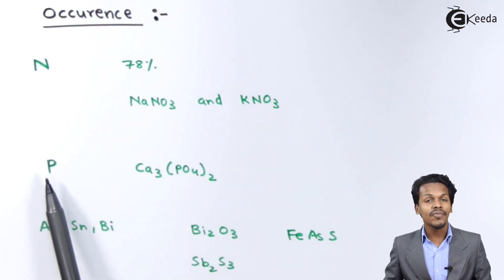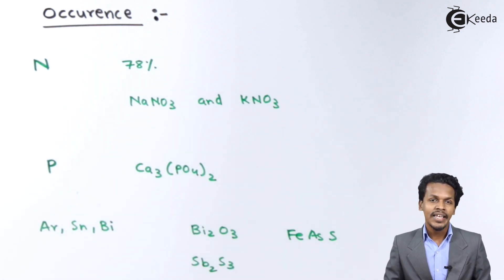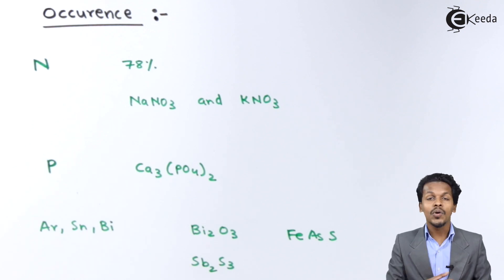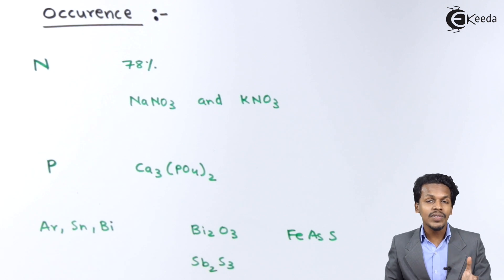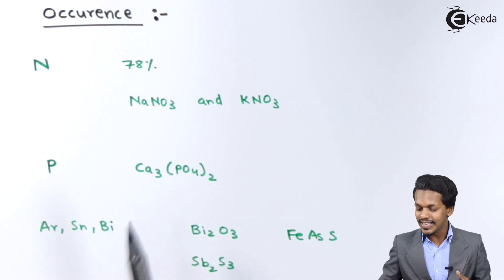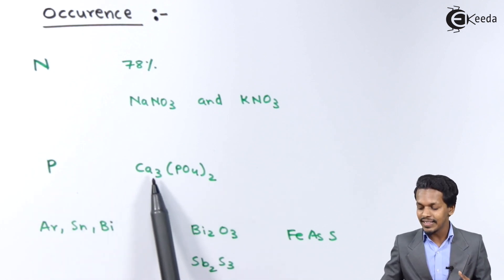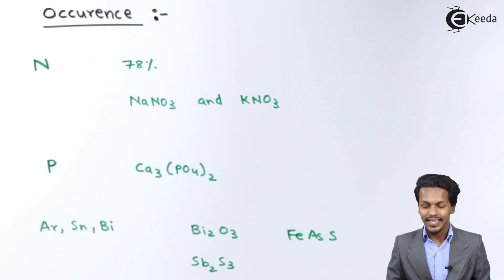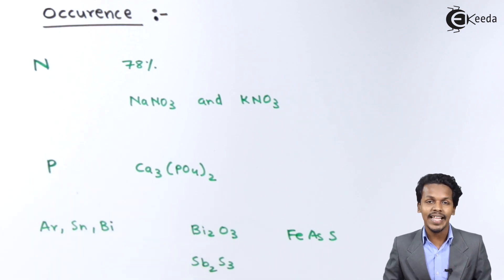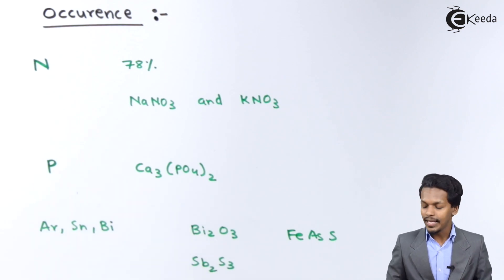Phosphorus is present in teeth as well as bones, because 60% of bones and teeth are made up of minerals, specifically Ca3(PO4)2. This is the occurrence of Phosphorus and where we can find it.